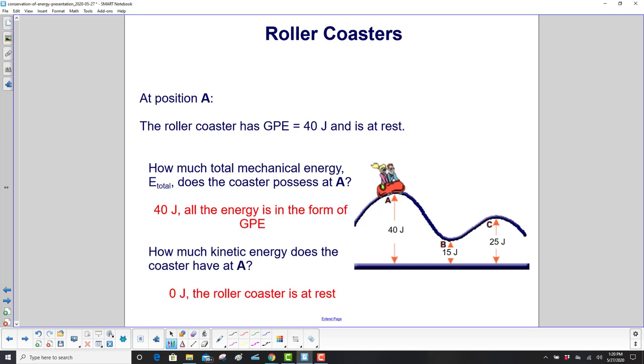And here's our answer. At position A, the roller coaster, this was a given, has a GPE of 40 joules, and it's at rest. If it's at rest, that means it has no kinetic energy.